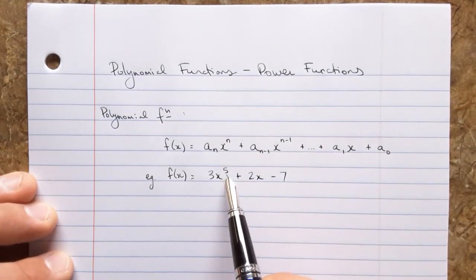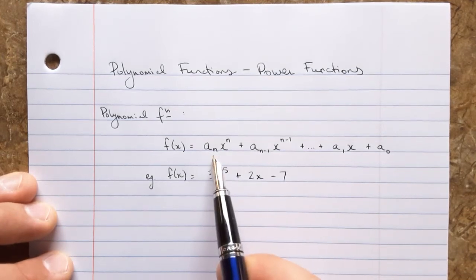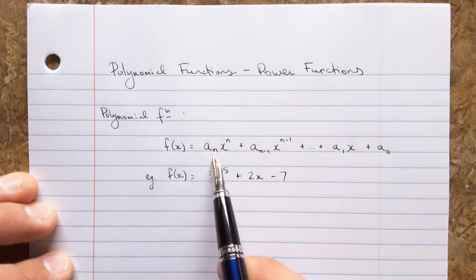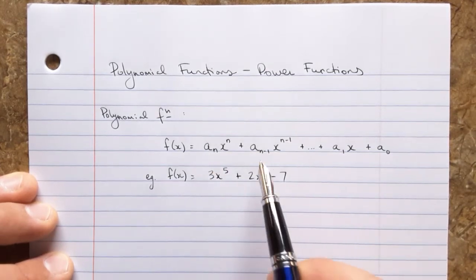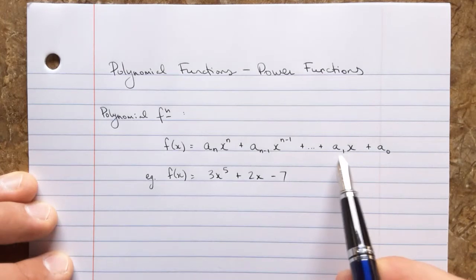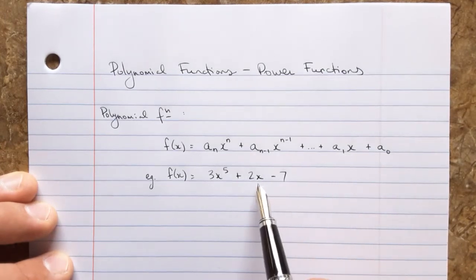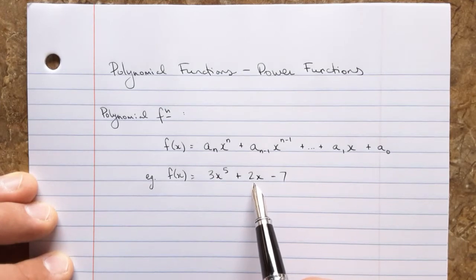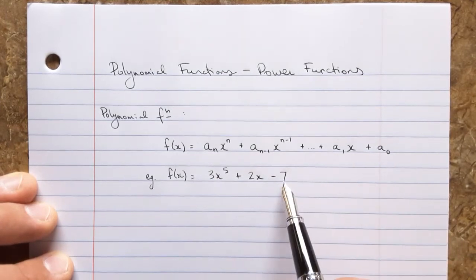So let me just write down an example. A polynomial function might look something like this: 3x to the fifth plus 2x minus 7. So this is a degree 5, n is 5, a5 is 3 here. It's just a label. That's all we're using. a sub n is a label to refer to this coefficient. None of these terms are in there, but this one is the first degree, x with the exponent 1, coefficient of 2. And there is a constant term for this one as well.